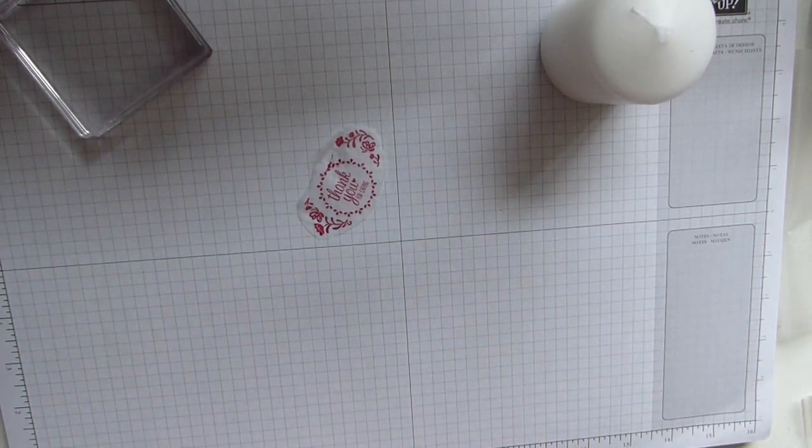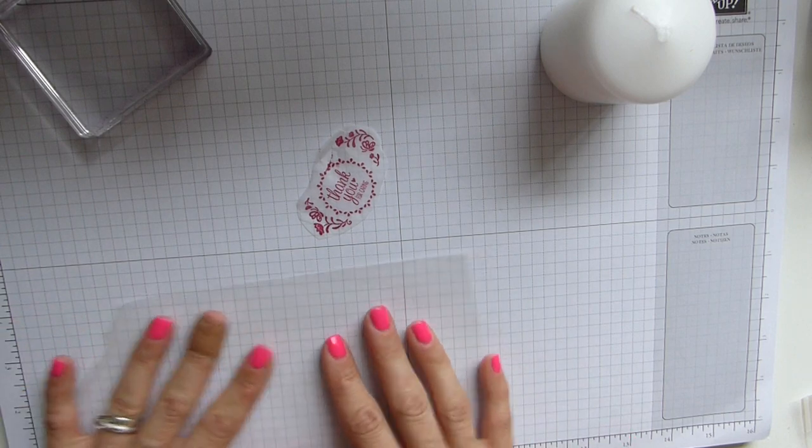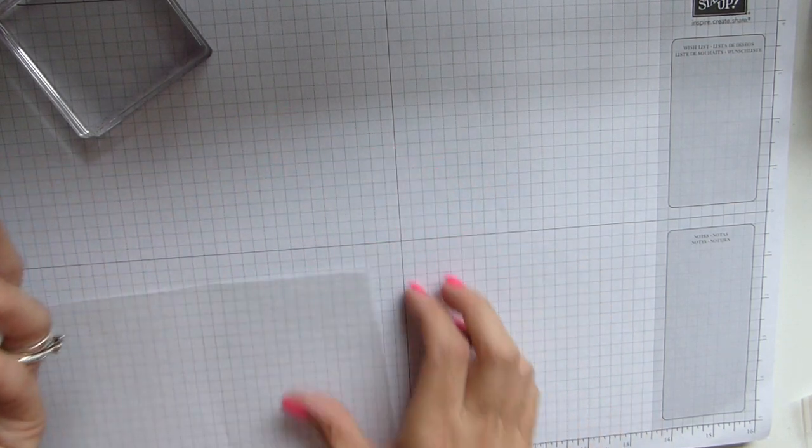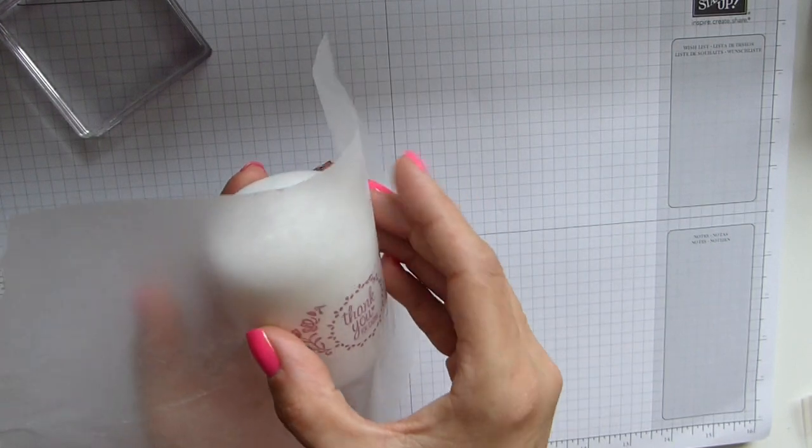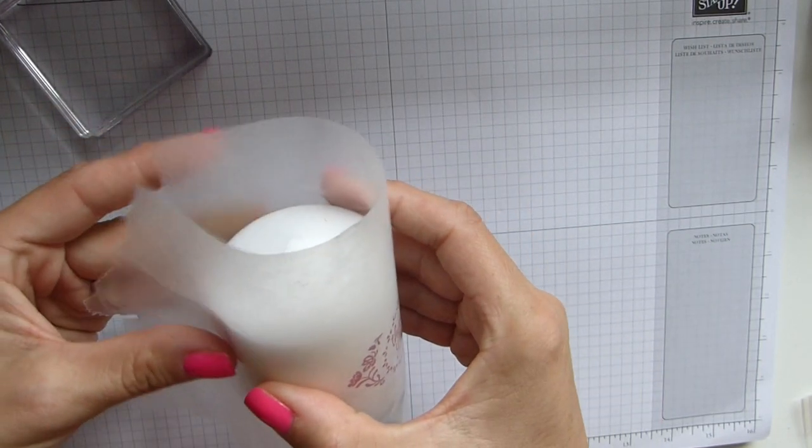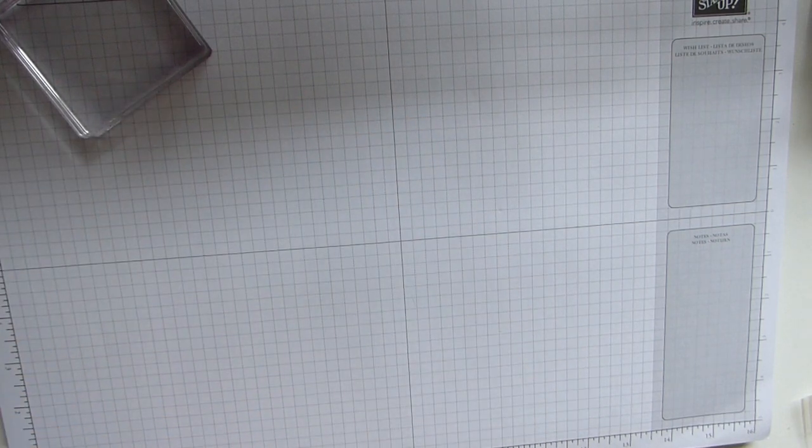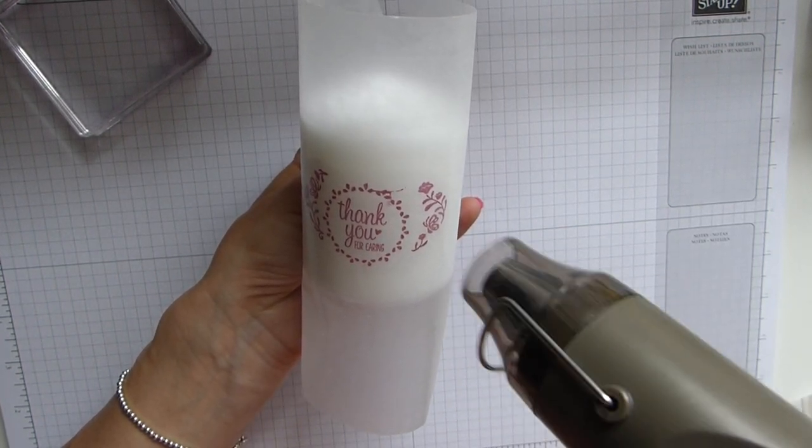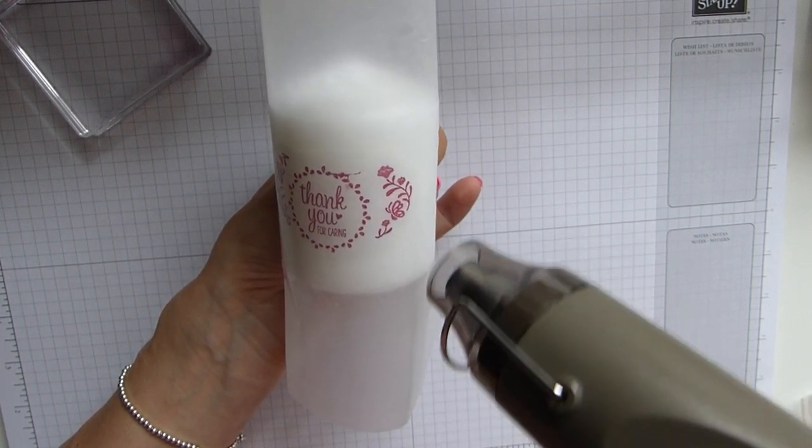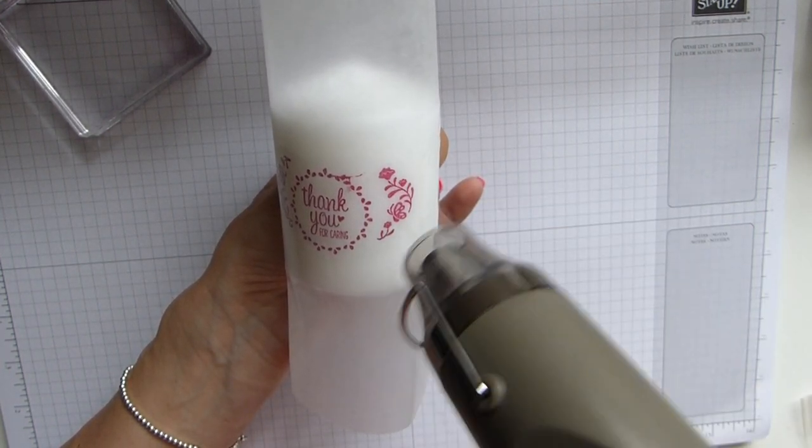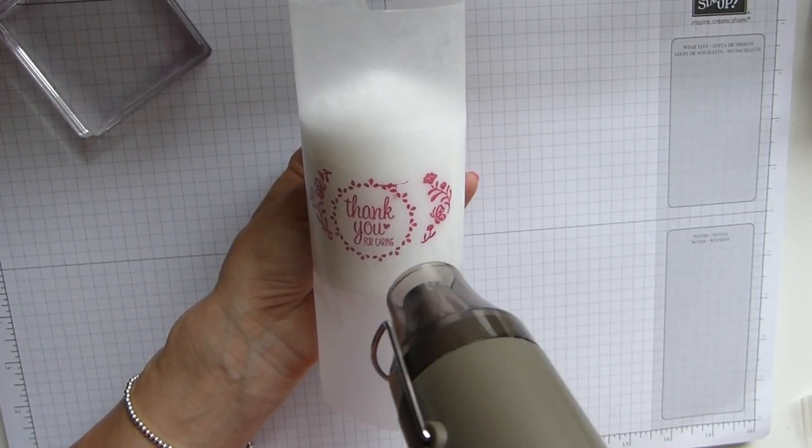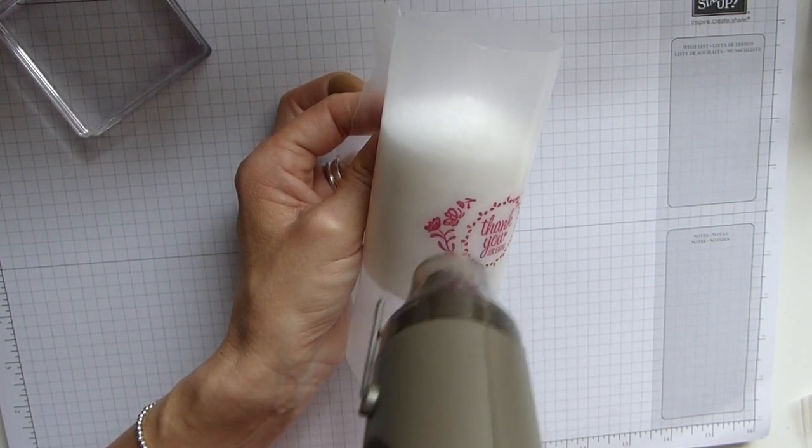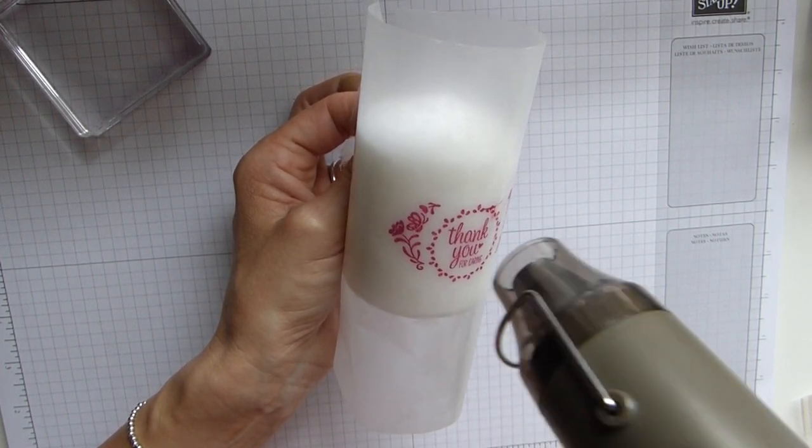Then take some wax paper and pop your design onto your candle, wrap your wax paper around making sure it's tight, then grab your heat tool and melt it. You will notice when the wax starts to melt because your image becomes brighter where it's starting to sweat underneath. Go around all the edges melting it into the candle. It can get quite hot on your fingers so be careful.